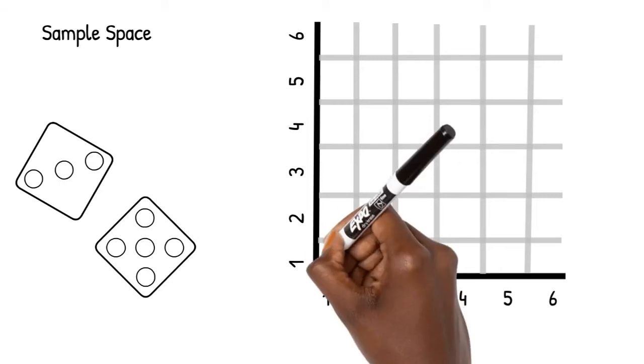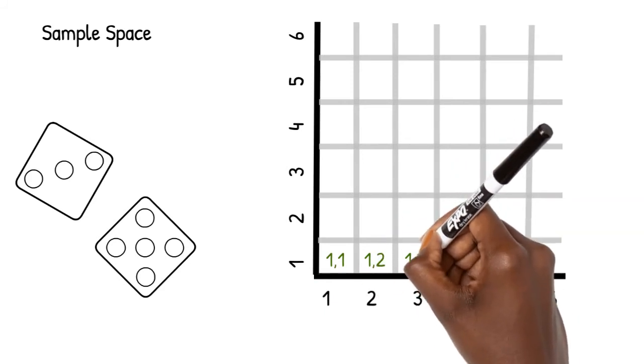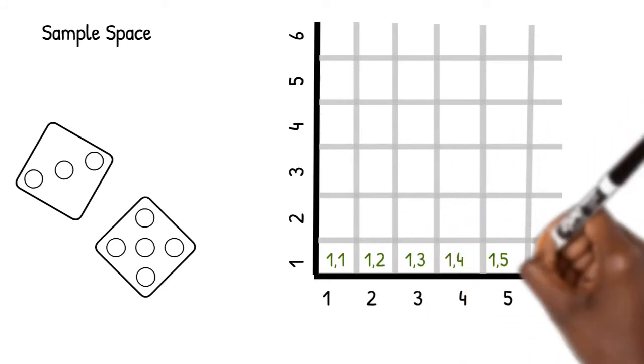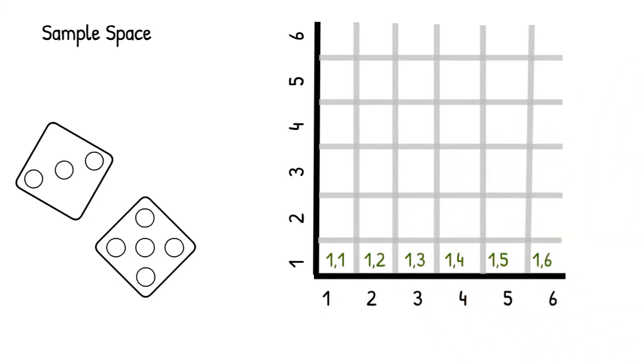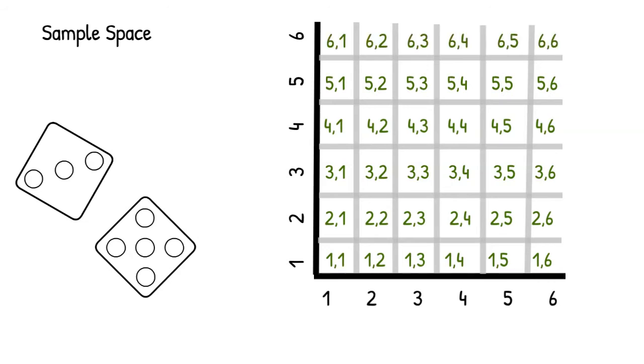In our first row, we have one one, one two, one three, one four, one five, and one six. Similarly, we fill out our second, third, fourth, fifth, and sixth rows.